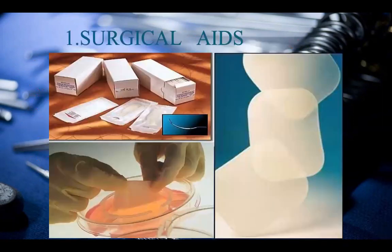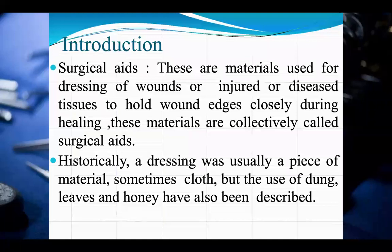These are known as surgical aids. You can see in this picture various types of surgical aids — surgical needles, surgical sutures, gauze cloth — all to be supplied by the pharmacy. The definition: surgical aids are materials used for dressing of wounds or injured or diseased tissues to hold wound edges closely during healing. These materials are collectively called surgical aids.